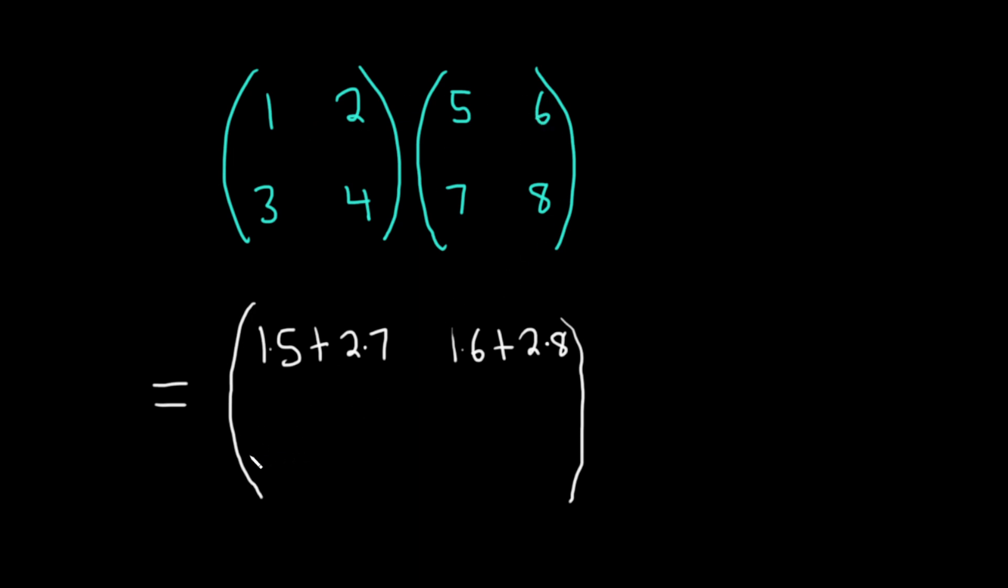Now down here we're in the second row, first column. That's where we are, second row, first column, so we use the second row, first column. If you just know the location of where you are in the matrix, it tells you how to multiply. It's really cool. So we're in the second row, first column, so second row, first column. Three times five plus four times seven.